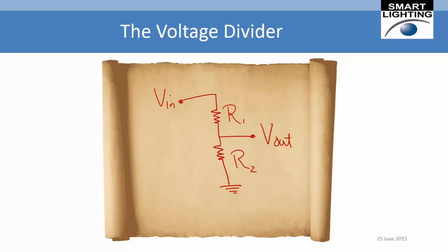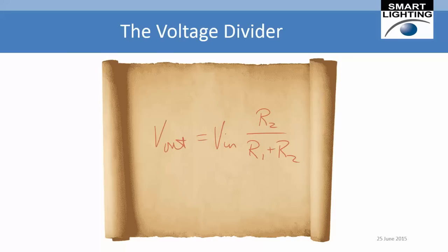Here's the voltage divider circuit. It consists of two resistors, R1 and R2, and it has an input voltage of some kind. It produces an output voltage, which is actually measured at a point between the two resistors. If we put in some kind of input voltage from a battery or power supply, the output voltage will be smaller and given by a function of the resistances. The output voltage is equal to the input voltage times the bottom resistor in the numerator over the sum of the two resistors.